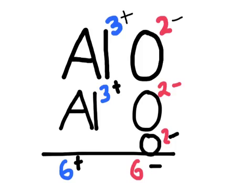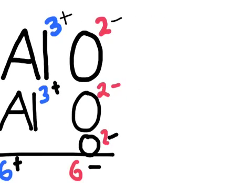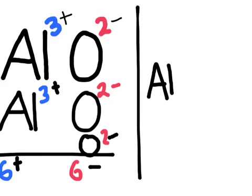So how would we write this formula in the end? Well we just count how many of each element we have. So we are going to write down that we have two aluminums and we can just put a little subscript two, and then we have three oxygens and we can put a little subscript three.